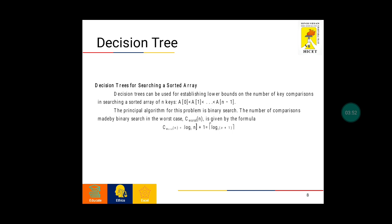Now, decision trees for searching a sorted array. Decision trees can be used for establishing lower bounds on the number of key comparisons in searching a sorted array of n keys. The principal algorithm for this problem is binary search. The number of comparisons made by binary search in the worst case is given by the formula C_worst(n) = ceiling of log base 2 of (n plus 1).